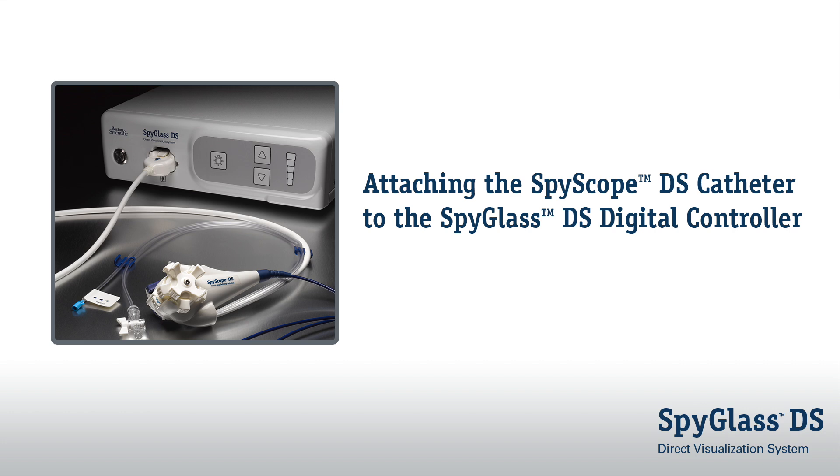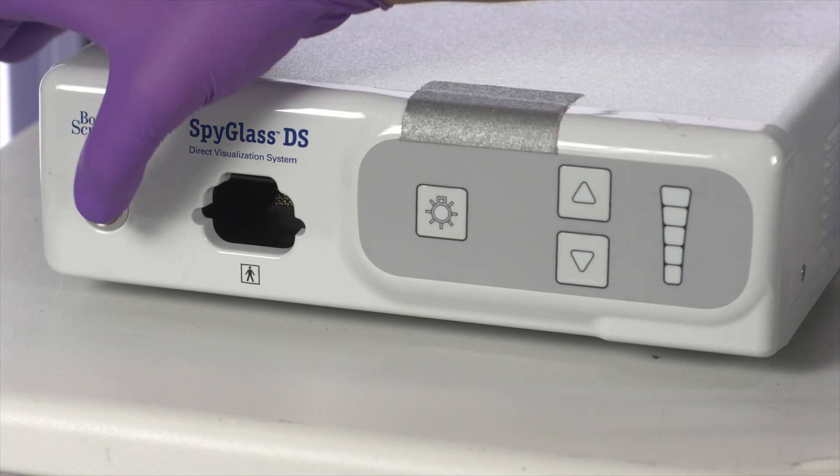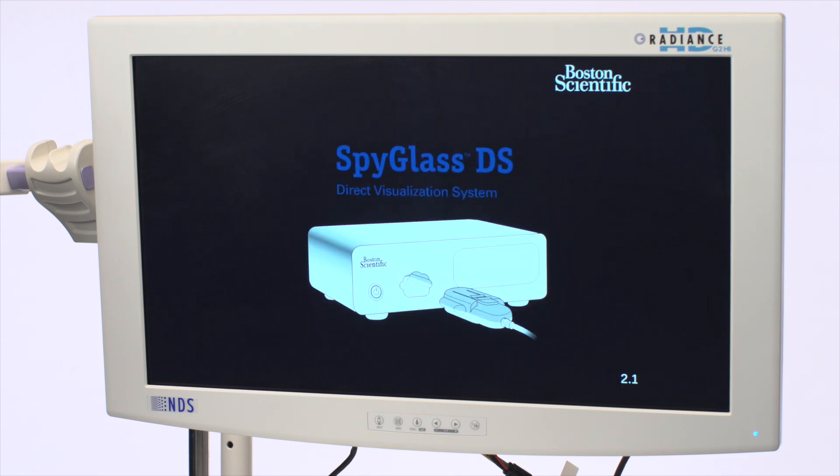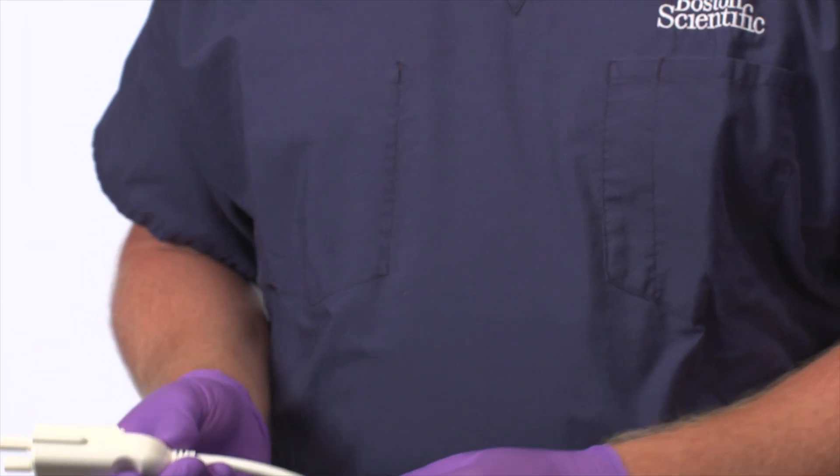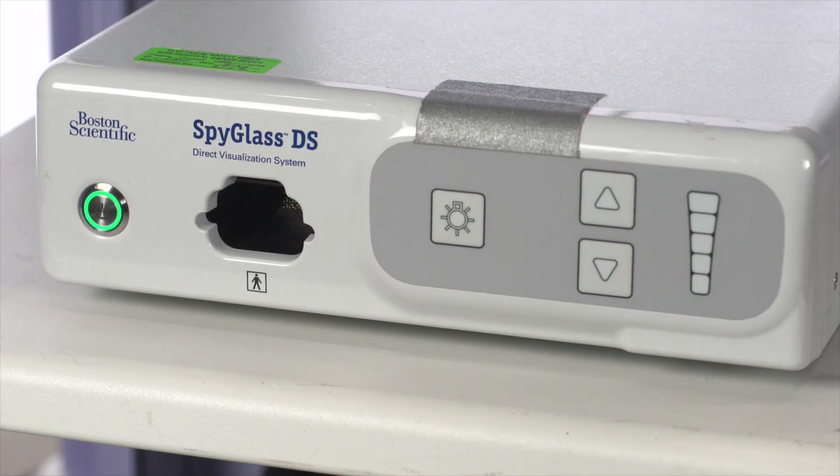Attach the Spyscope DS catheter cable to the Spyglass DS digital controller and adjust the image following these steps. Power on the controller. When the monitor displays the Cable Connect screen, plug the Spyscope DS catheter cable connector, locking tab facing up, into the receptacle on the front panel of the controller.